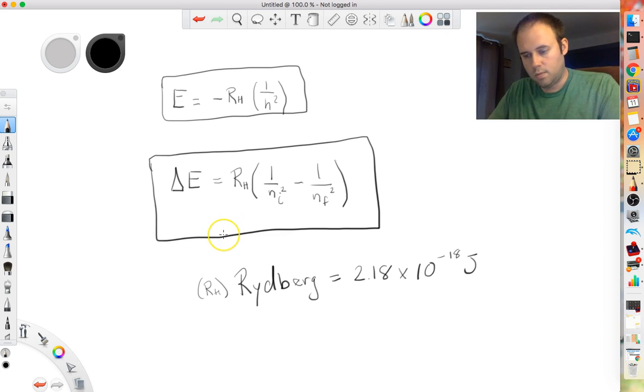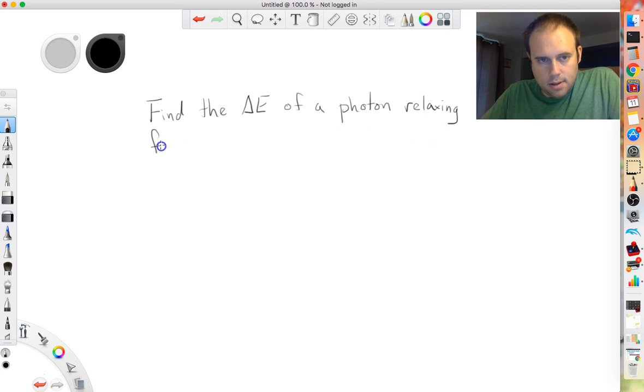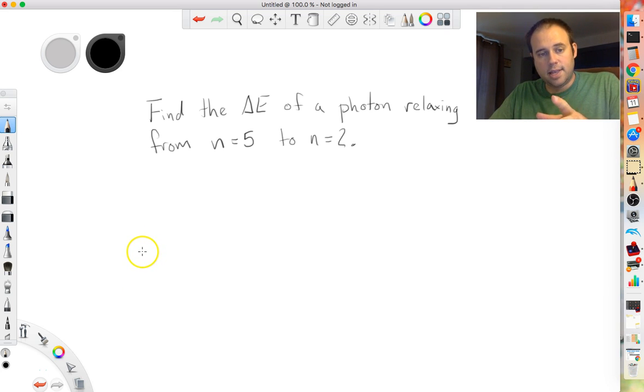So I do believe I have a problem here, and we will give this a shot. So here's the question. I want you to find the delta E, the change in energy of a photon relaxing, meaning it's coming down from a higher energy state. So a photon relaxing from an energy level of five, quantum level five, to an energy level of n equals two. So try this out, use the equation that you just saw earlier, copy it down if you need to, pause the video, see if you can get the answer, and then come back. So I'll see you guys in a minute.